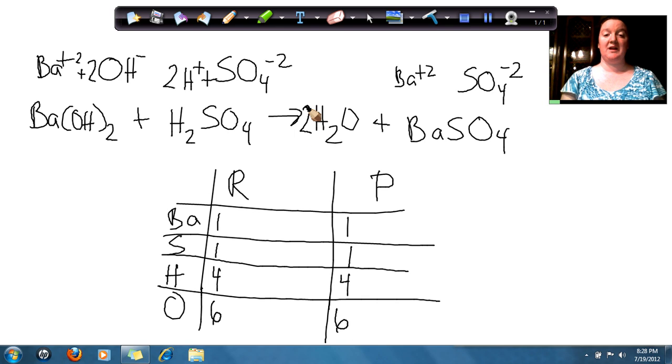So now I have it balanced by simply adding the 2 in front of the coefficient of water. So I have 1 barium hydroxide plus 1 sulfuric acid, goes to 2 water plus barium sulfate. Have a great day. Bye-bye.